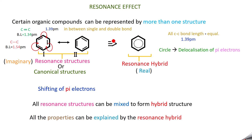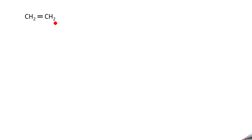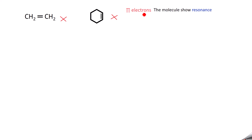Resonance effect is the effect where you are able to write more resonance structures by shifting pi electrons. However, a very important point: we must have pi electrons for a molecule to show resonance, but the presence of pi electrons alone is not sufficient. For example, CH2=CH2 has a pi bond but does not show resonance. So in addition to pi electrons, other conditions are also needed.